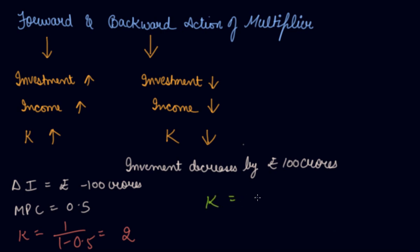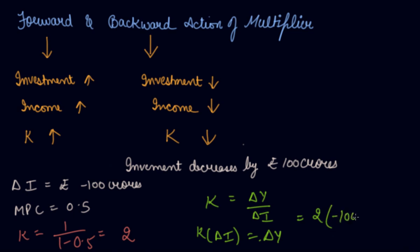Using the formula K = change in income divided by change in investment, we get change in income = K multiplied by change in investment. With multiplier K = 2 and change in investment = minus 100 crores, your change in income is rupees minus 200 crores. This means that with the decrease in investment, income has decreased twice — this is the backward action of the multiplier.